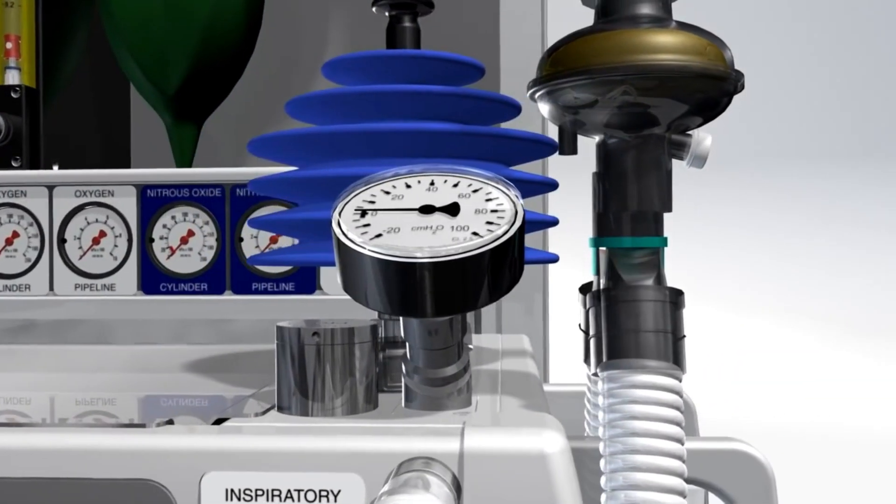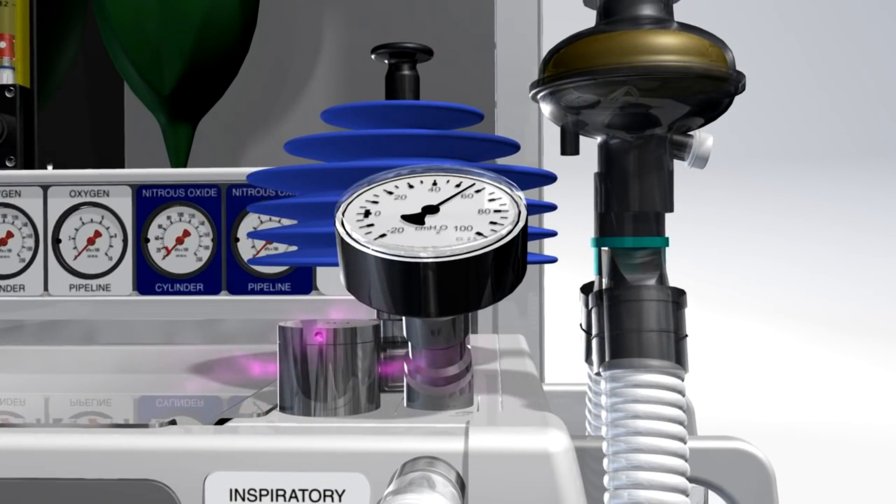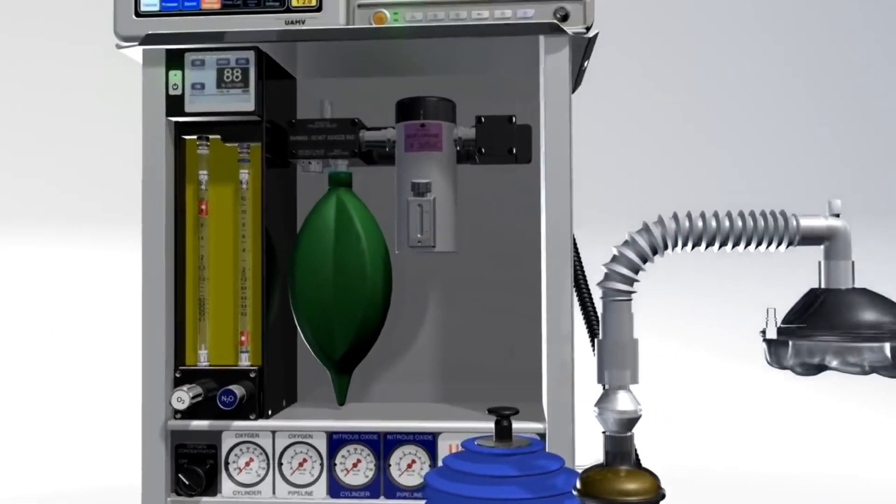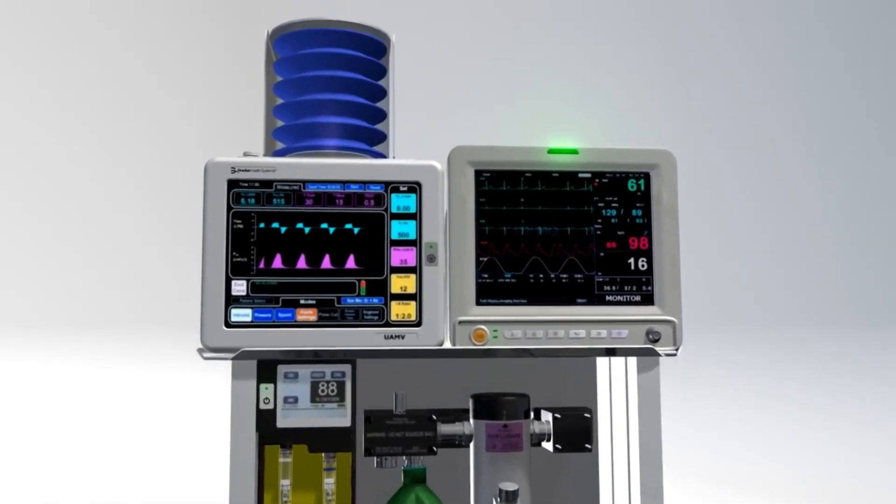Because the performance of the vaporizer is so variable, accurate calibration is impossible. However, many designs have a lever which adjusts the amount of fresh gas which enters the vaporizing chamber.